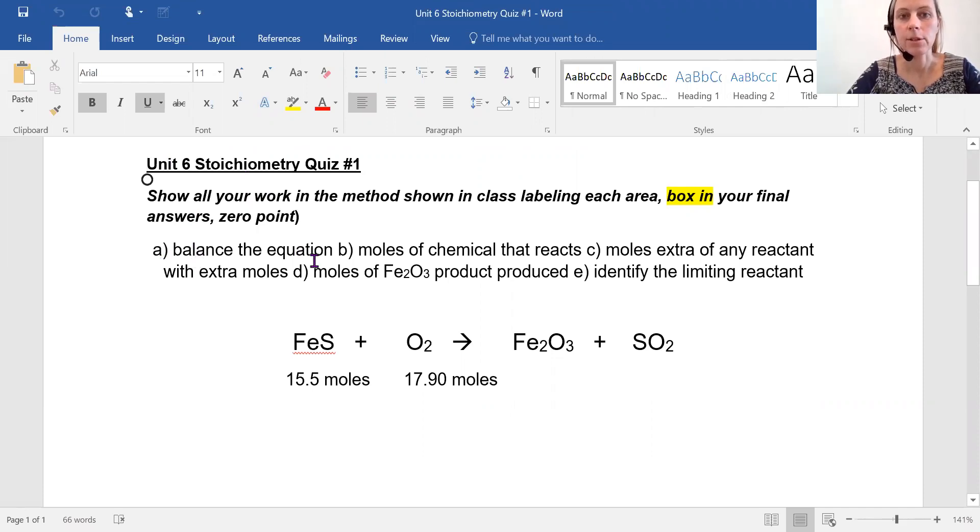So in this case, A says balance the equation. You need to make sure it's balanced because by balancing, you're giving information about that balanced equation. Then part B says moles of the chemical that actually reacts. Part C says moles of any extra and then moles of just this one product, iron three oxide.